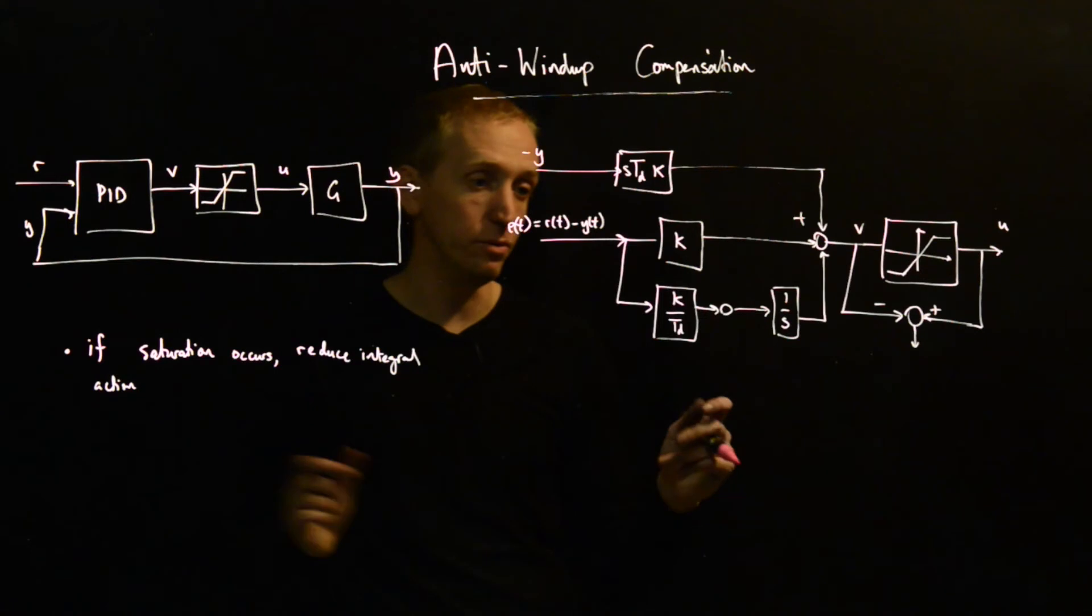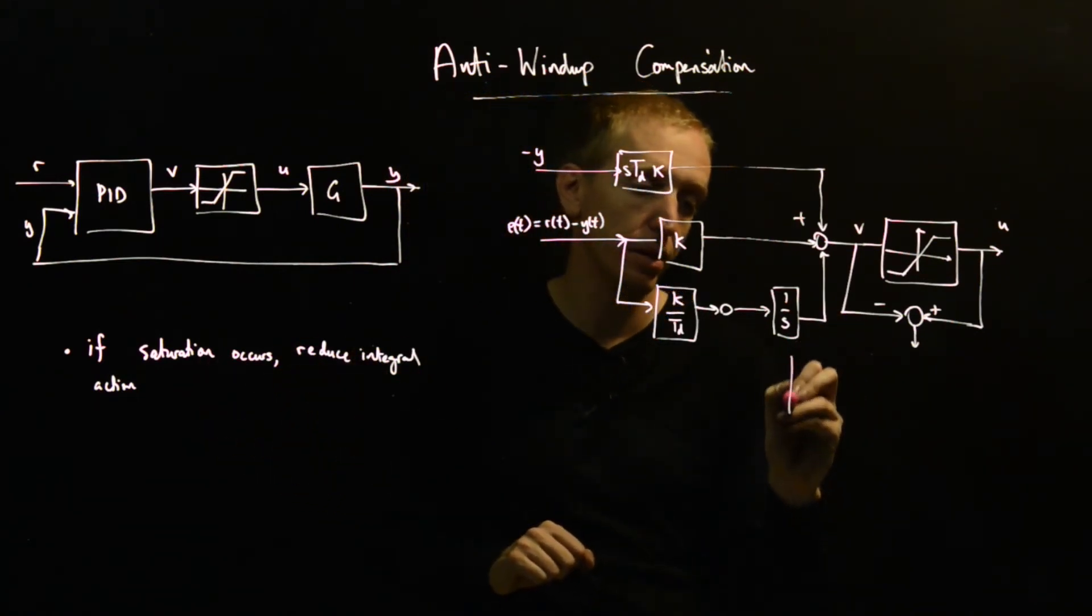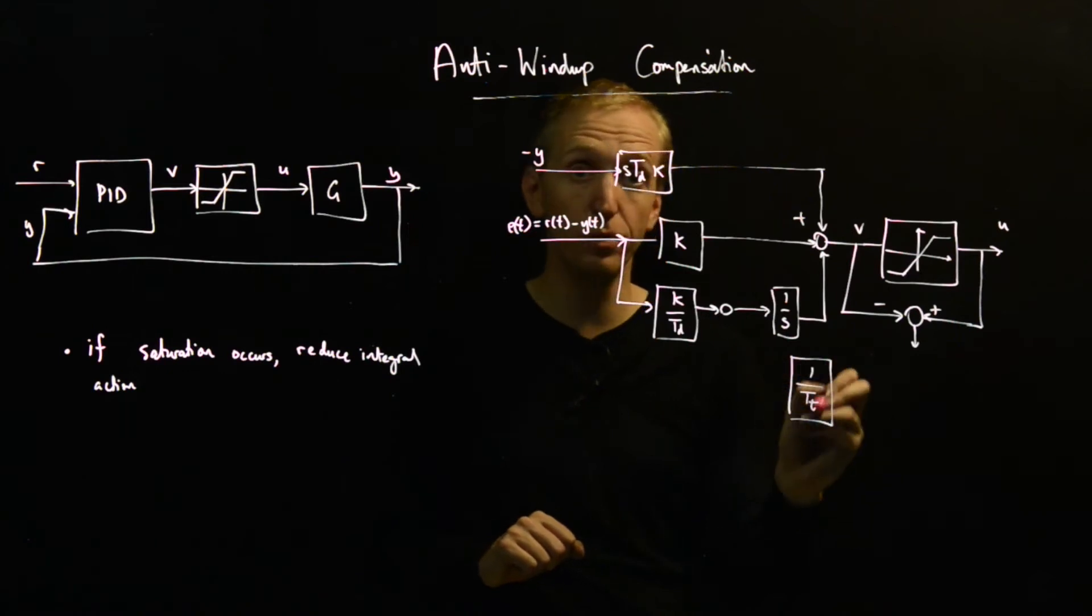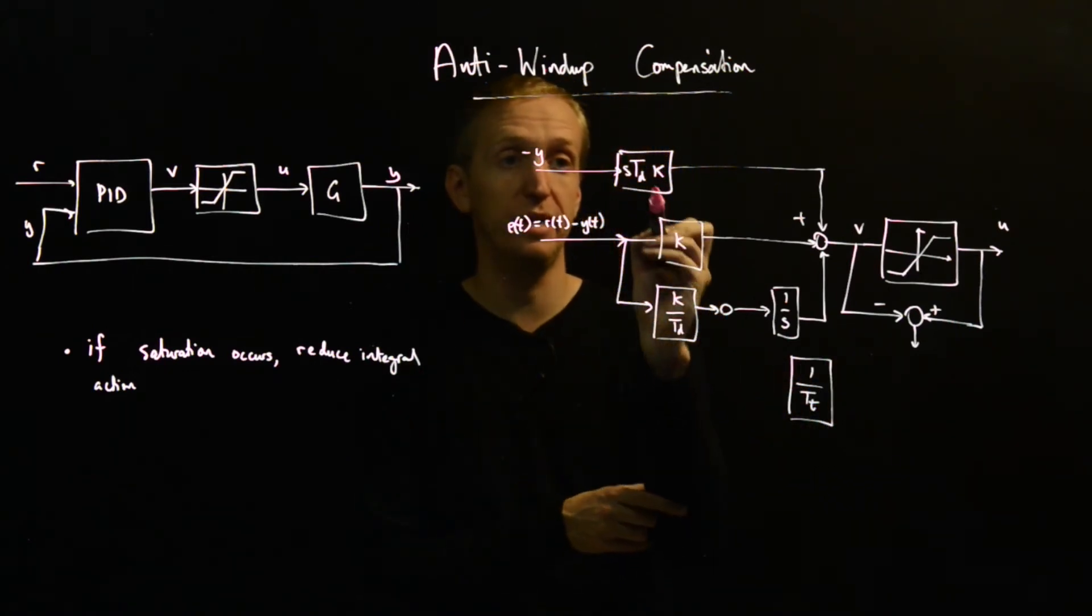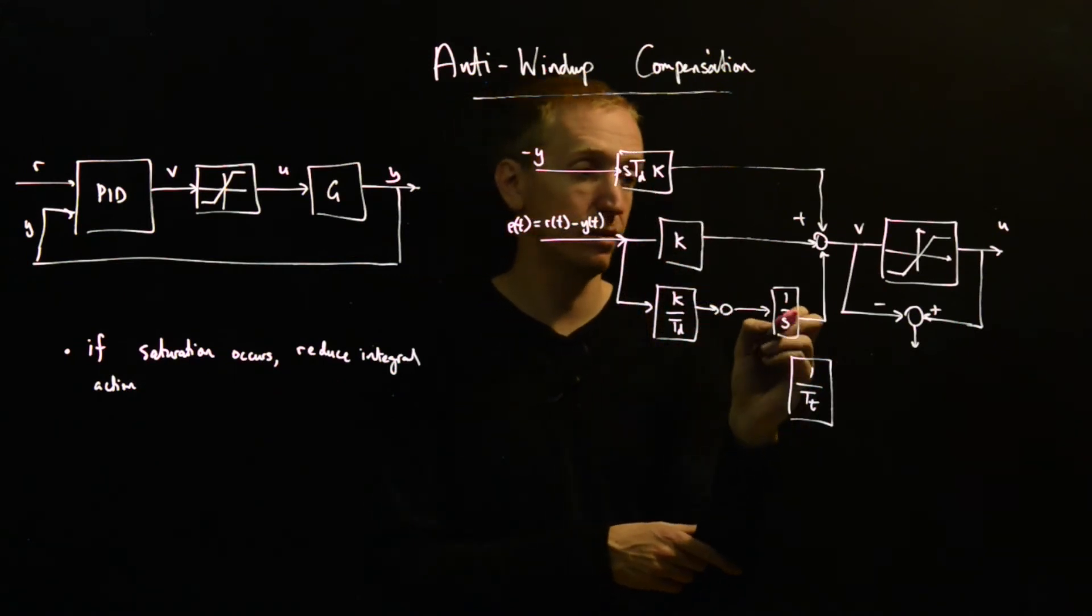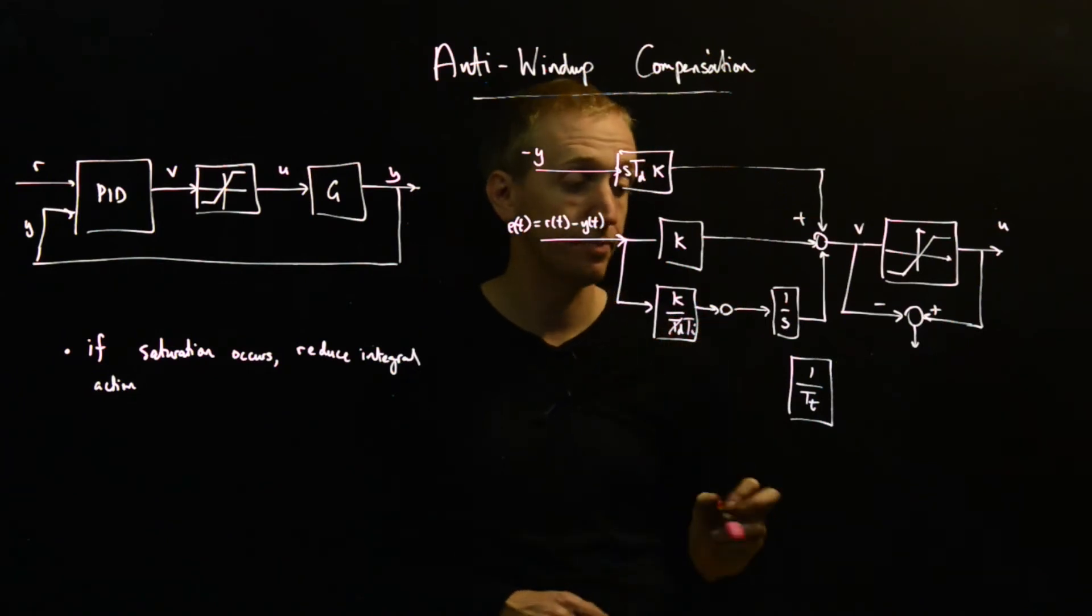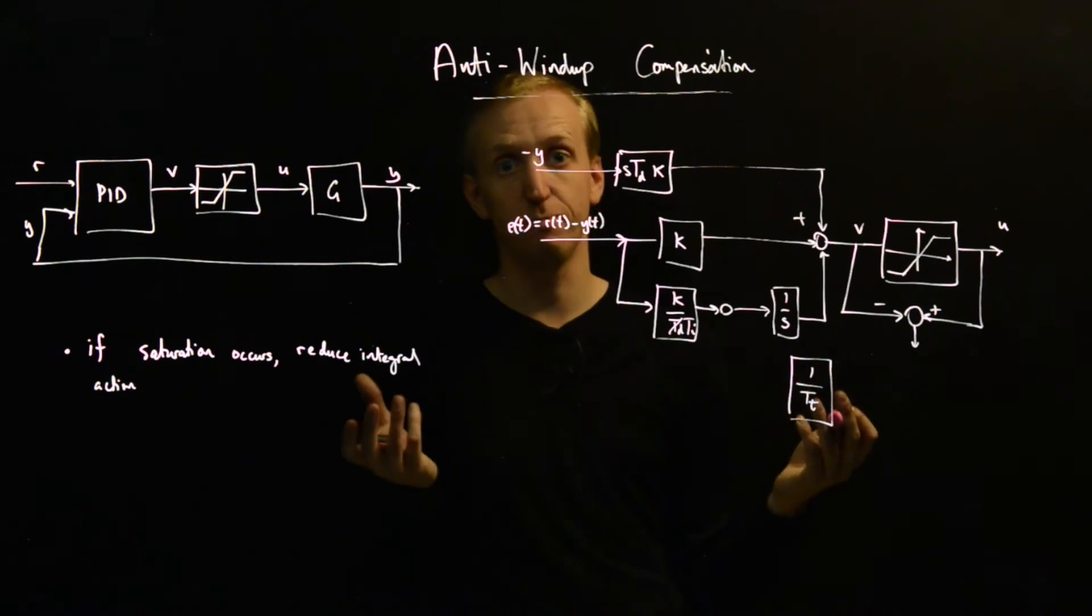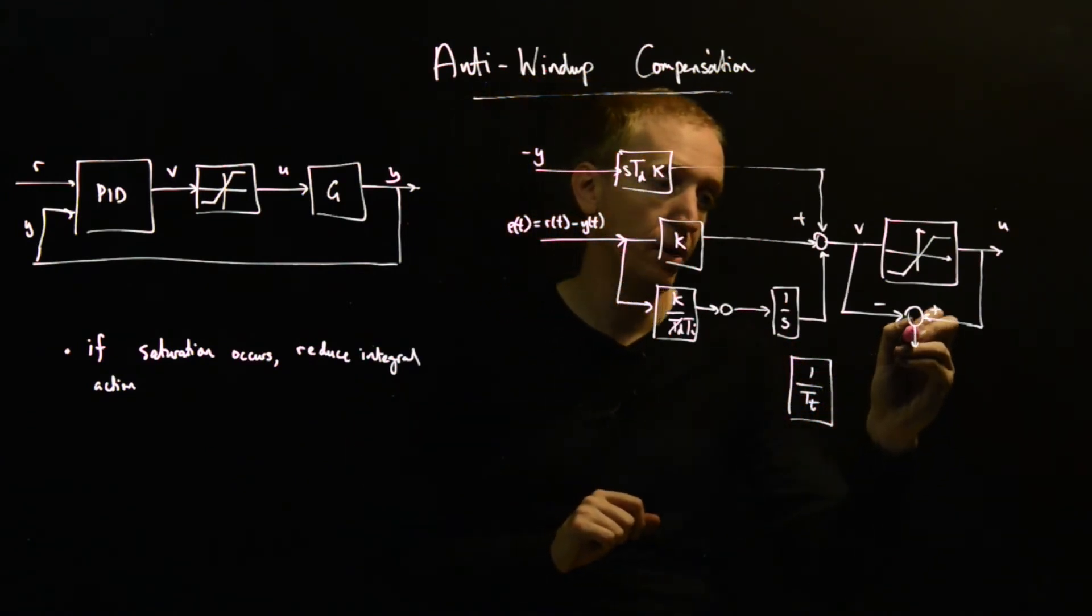And what do we do? Well, we reduce our integral action if saturation is occurring. And to do that, we put in a 1 over T_T. So we're introducing a new design parameter, T_T. So standard PID is all about designing K, T_D, and this is supposed to be T_I. T_I. And now we're introducing a fourth parameter, which is part of our anti-wind-up compensation design.